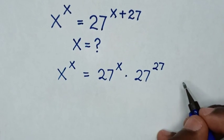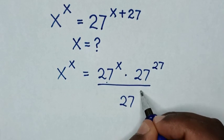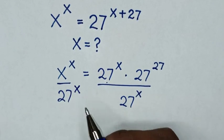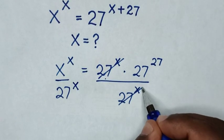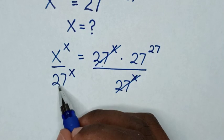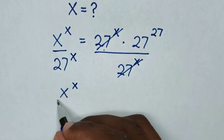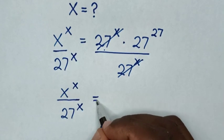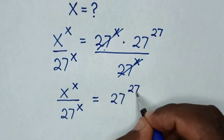In the next step, we will divide by 27 power of x on both sides. So this 27 power of x will cancel, and it will be x power of x over 27 power of x, which is equal to 27 power of 27.